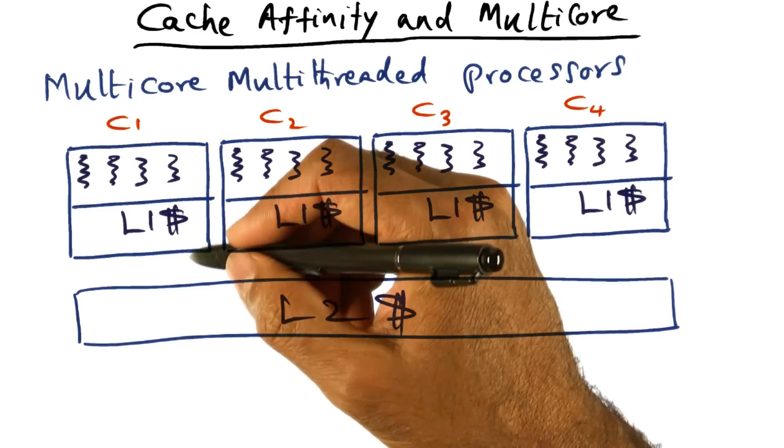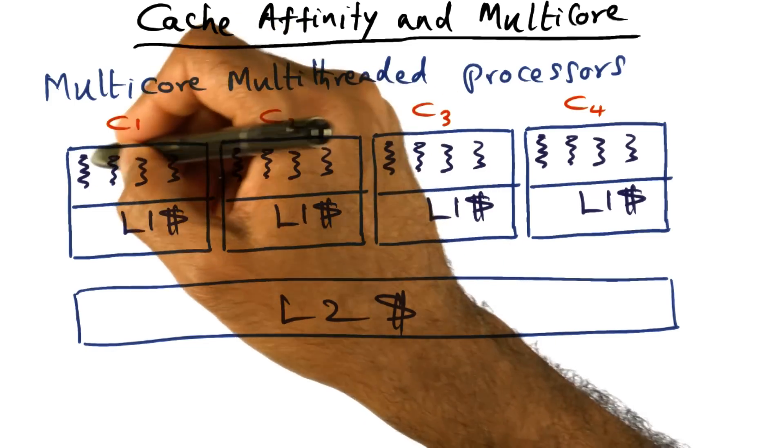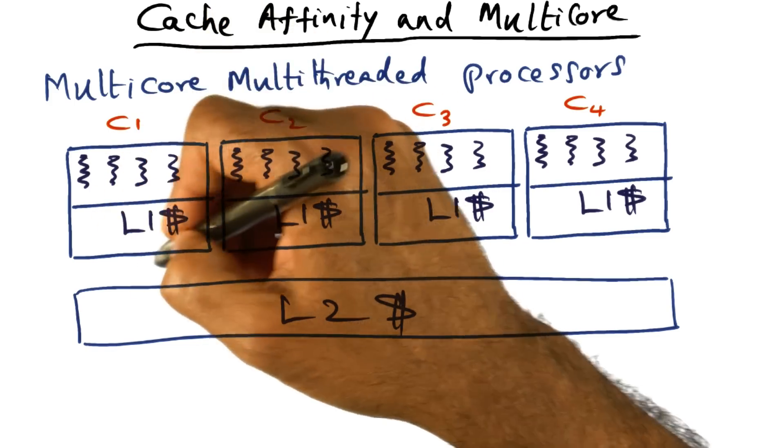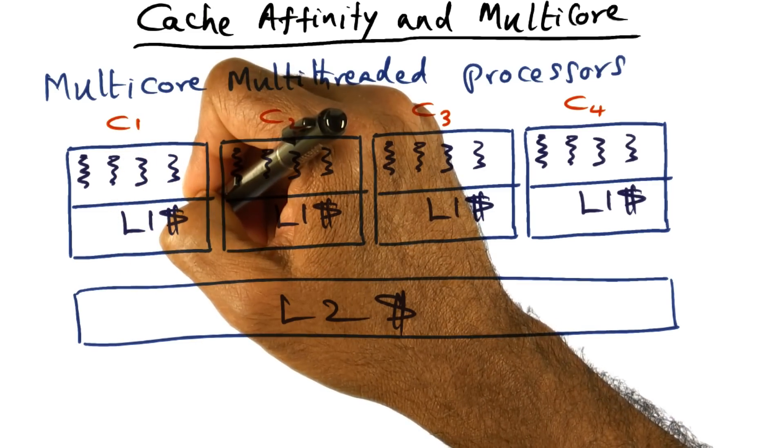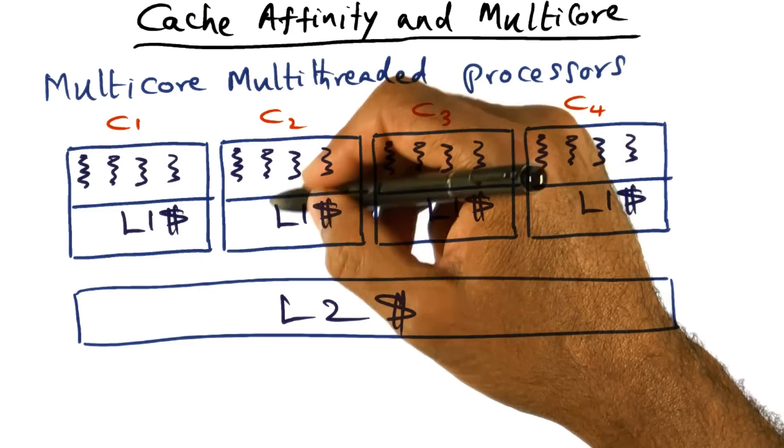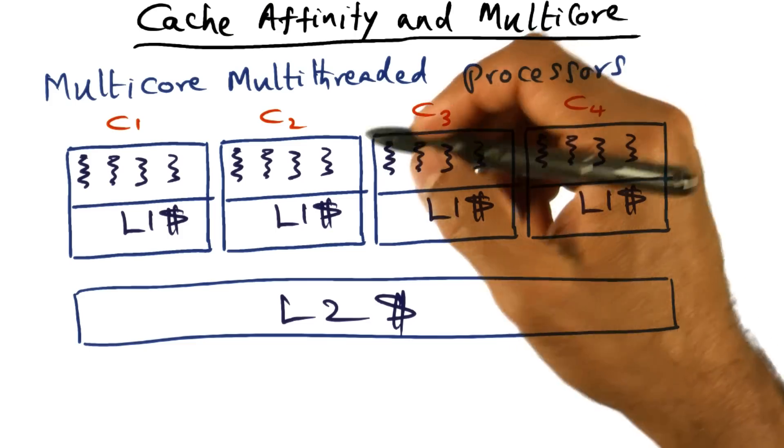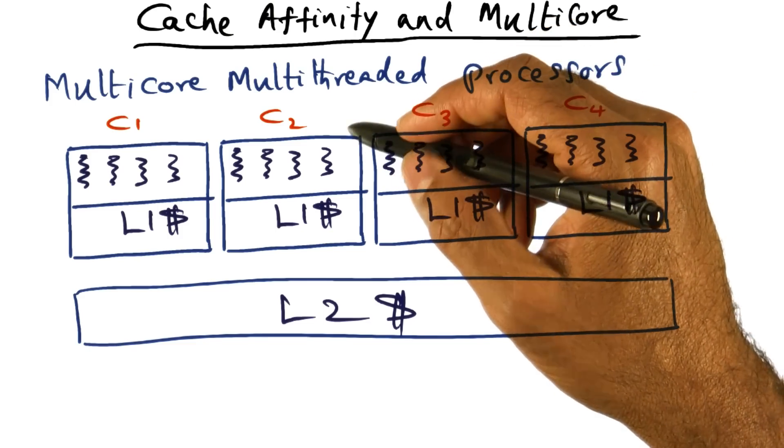And clearly, the scheduling decision, what it tries to do is to make sure that most of the threads that are scheduled to a particular core may find their working set in the L1 cache if possible. And similarly, the threads that are scheduled on this may find their working set in L1 cache of C2 if possible, and so on. And also, the other thing that the operating system may try to do is,